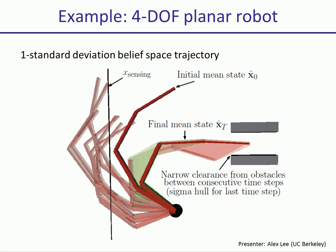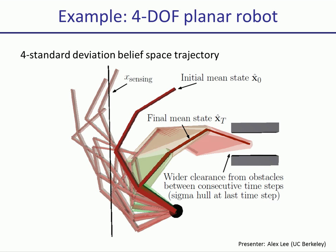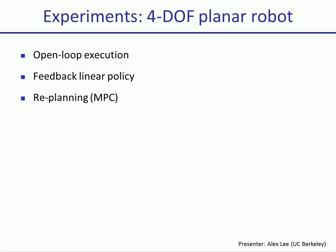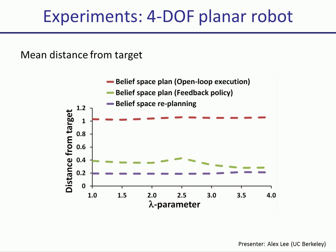Let's now take a look at what we get when we scale lambda up to 4. The sigma hulls are bigger because we consider a multiple of 4 standard deviations for the sigma points. For our experiments, we consider three belief-space planning approaches: open-loop execution of the nominal belief-space plan, a feedback linear policy using a linear quadratic Gaussian controller around the means of the nominal plan, and replanning using the MPC paradigm. We tried the three approaches for a hundred simulated executions for various noise parameters. With replanning in belief-space, the mean distance is 0.2 units from the target, which is a considerable improvement over execution of a locally optimal state-based trajectory and over open-loop execution of belief-space trajectories.